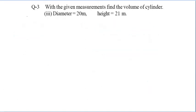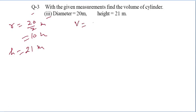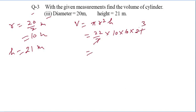Question 3, part (c): diameter = 20 m, so r = 10 m. Height h = 21 m. Volume = 22/7 × 10 × 10 × 21. Cancel 7 with 21, giving 22 × 3 × 100 = 6600 m³. That is your answer.